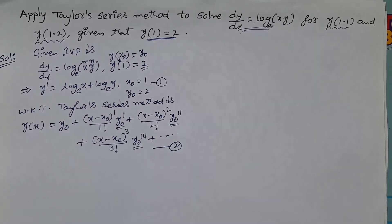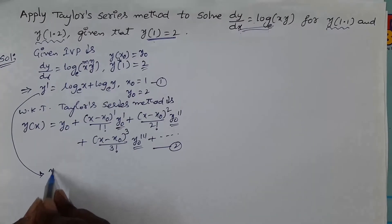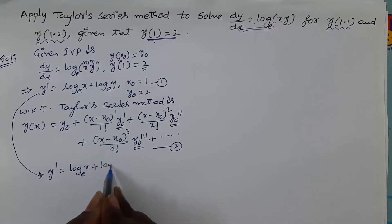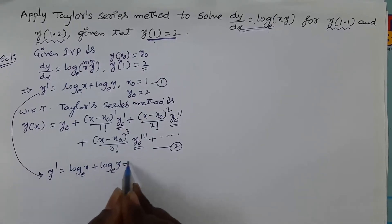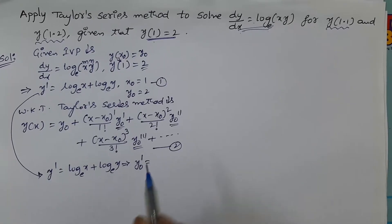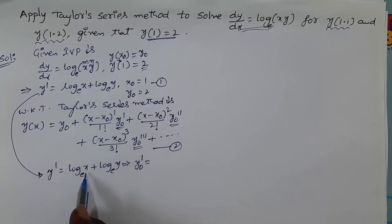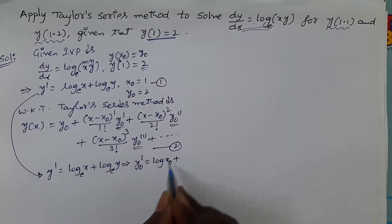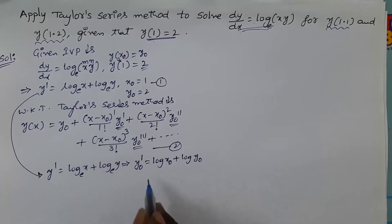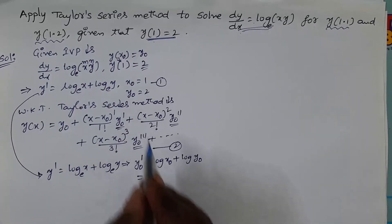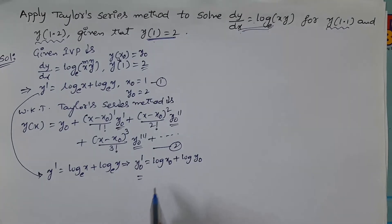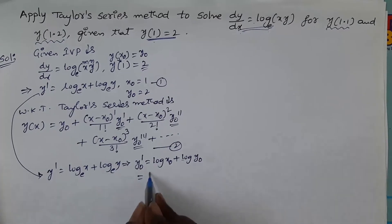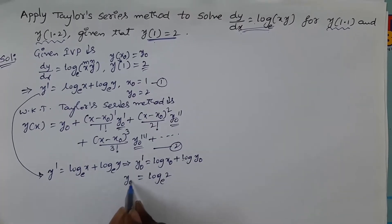From the given problem we have y' = ln(x) + ln(y). To find y₀', replace variables with suffix 0: y₀' = ln(x₀) + ln(y₀). Since x₀ = 1, ln(1) = 0, so y₀' = 0 + ln(2) = ln 2.